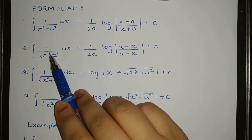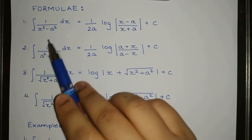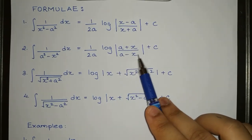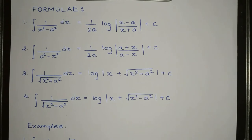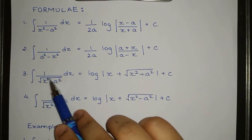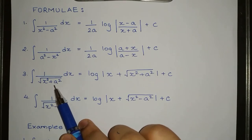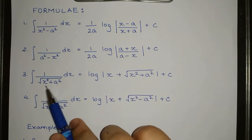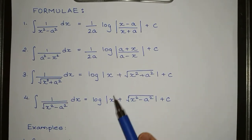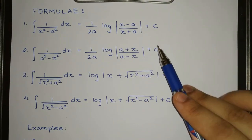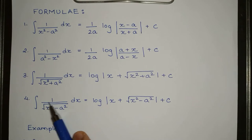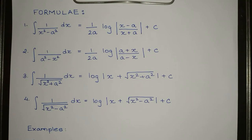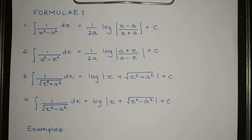Then next, if we have integration of 1 divided by (a² minus x²) — that is the reverse — then it is 1 upon 2a, log of (a plus x) divided by (a minus x), plus c. Now next, if we have 1 divided by square root of (x² plus a²), then this is log of x plus square root of (x² plus a²). And similarly, for 1 divided by square root of (x² minus a²), it is log of x plus square root of (x² minus a²), plus c.